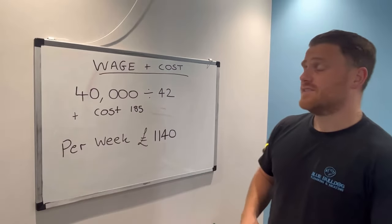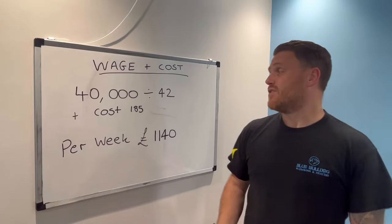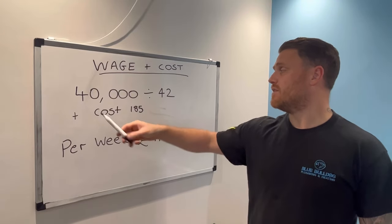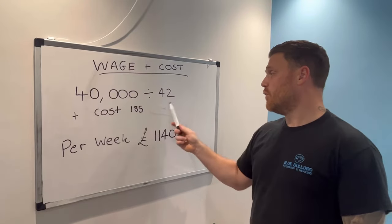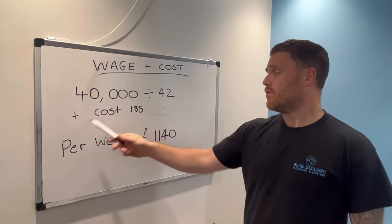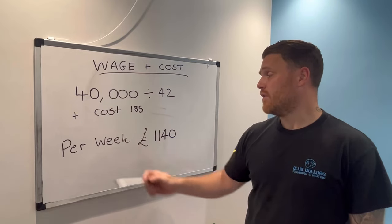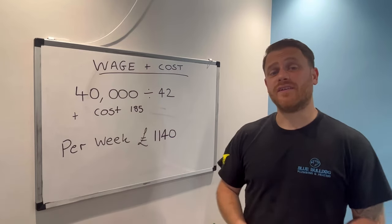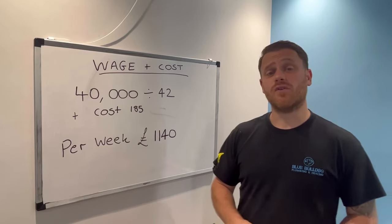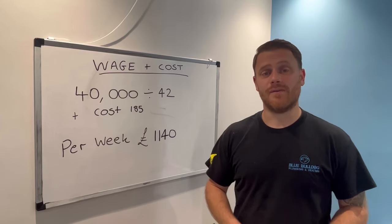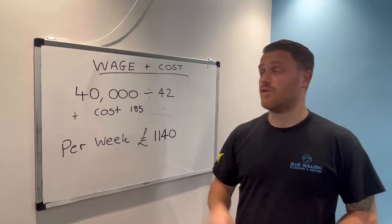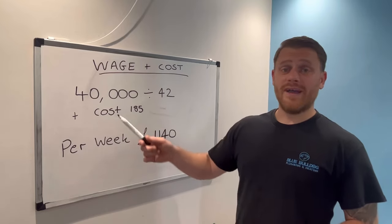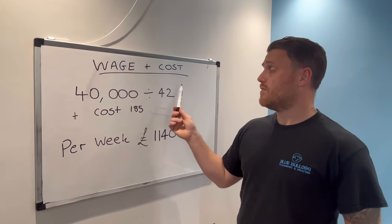So taking all those factors into consideration — your wage plus your costs — £40,000 divided by 42, plus the £185 per week business cost, means your business needs to bring in £1,140 per week to cover your wage and cover the costs.